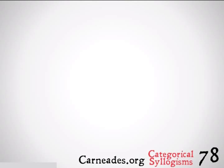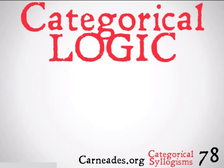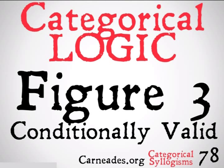Welcome back to 100 Days of Logic with 90 Second Philosophy and carnades.org. Today we're continuing with categorical logic and categorical syllogisms, looking at Figure 3 conditionally valid. Conditionally valid syllogisms are only going to be valid for Aristotle — never valid for Boole — and only valid for Aristotle under certain conditions.